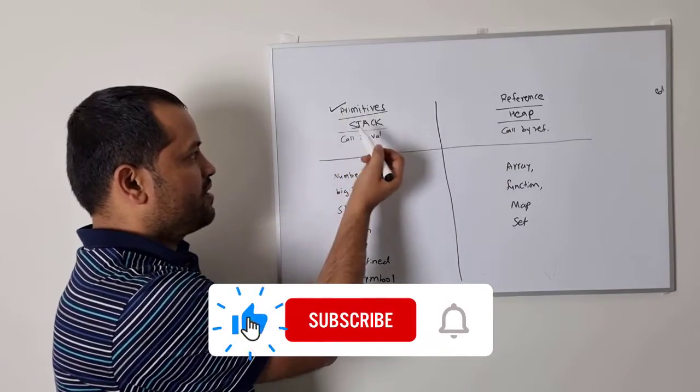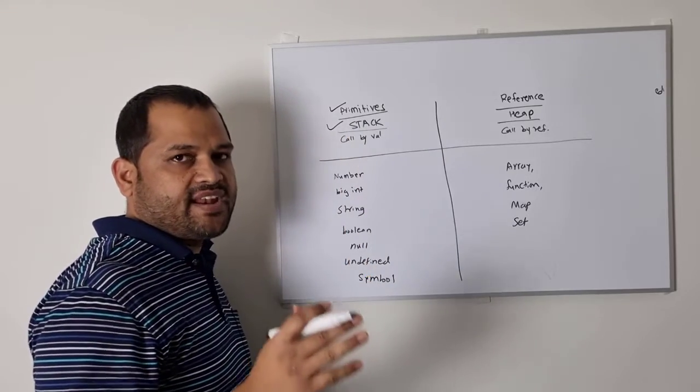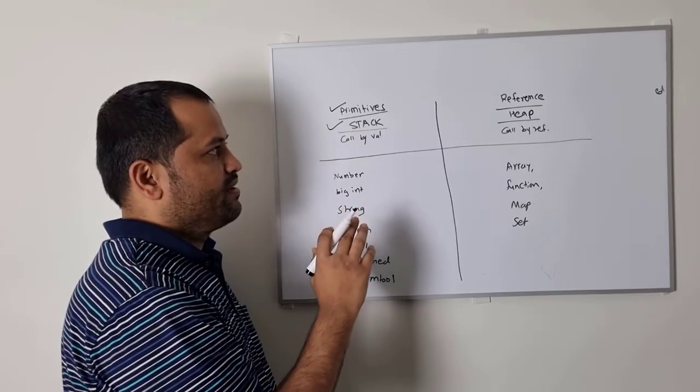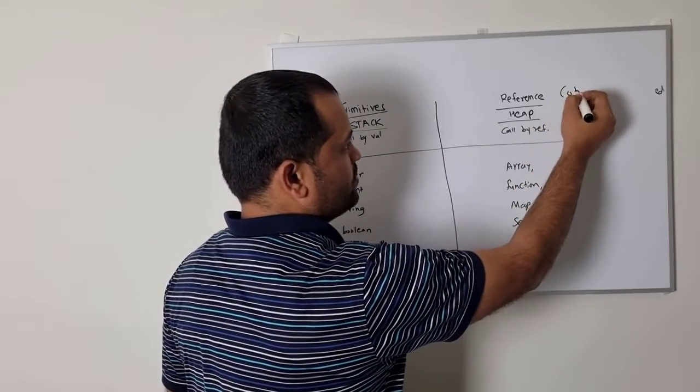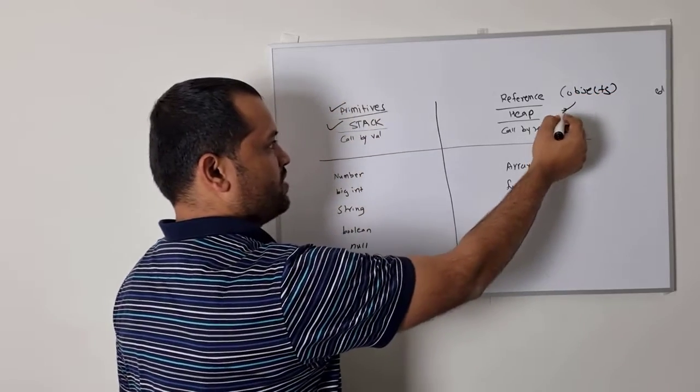Primitives are stored on the stack. Remember that in the JavaScript runtime, there is a stack and a heap. Primitives are stored on the stack, while reference type variables, which we can call objects, are stored on the heap.